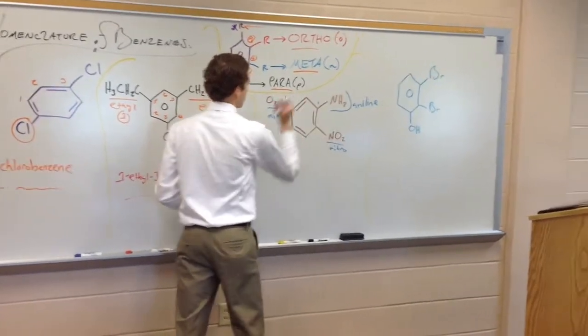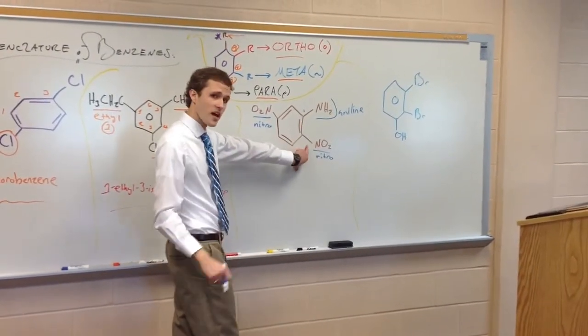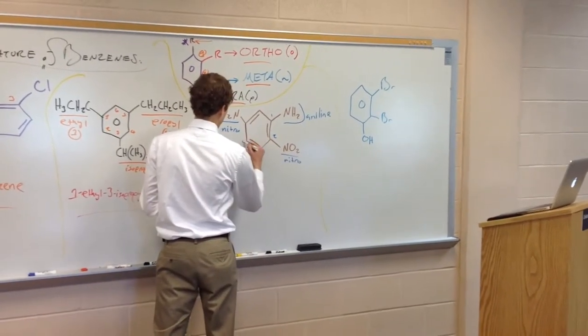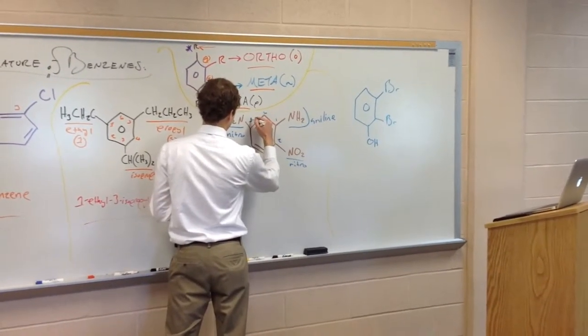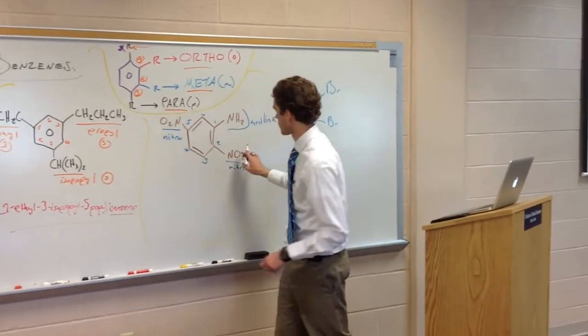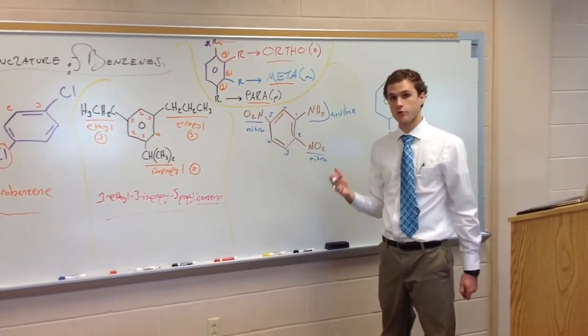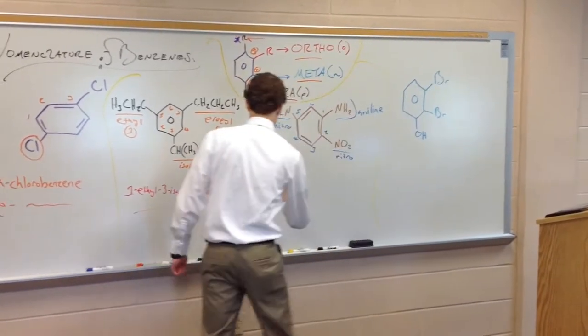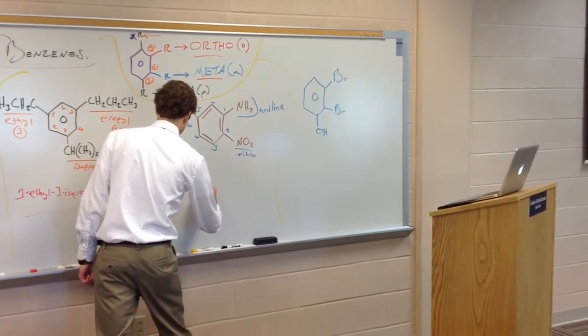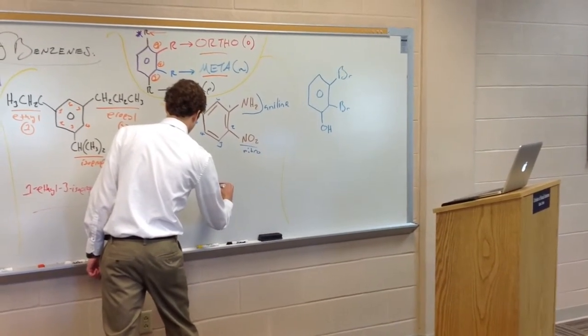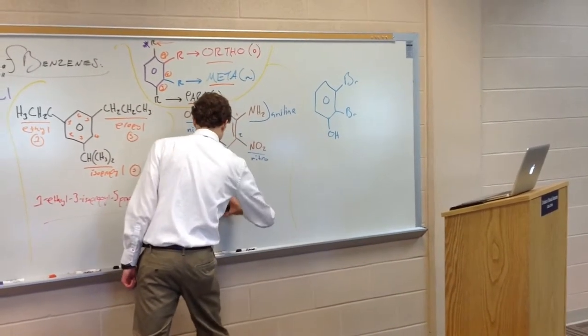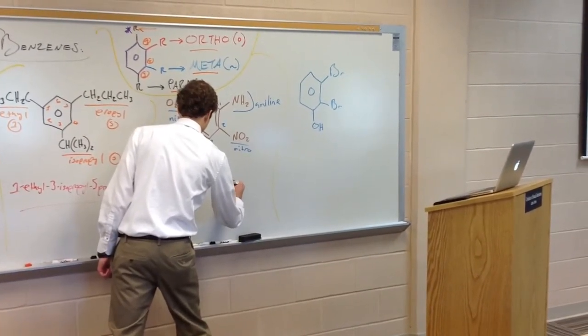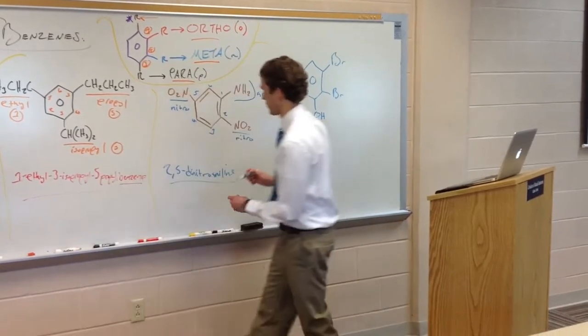1, should this be carbon 2, or should this be carbon 2? Well, since this carbon has the R group attached, let's make it carbon 2. Since this guy doesn't. And then we'll just go around the chain. 4, 5, and 6. All right. So this is going to be 2, 5, dinitro, not benzene, but dinitro aniline.